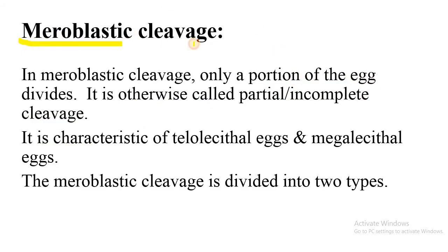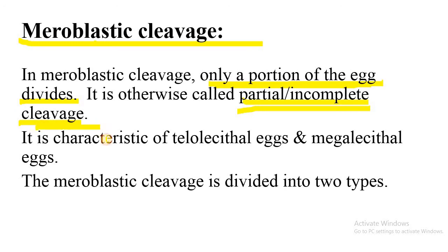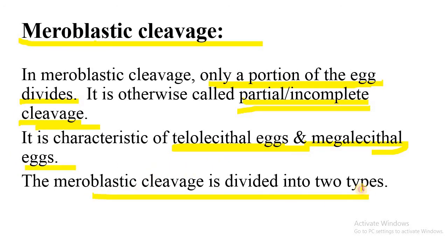Coming to meroblastic cleavage — here only a portion of the egg divides, not the whole egg. It is otherwise called partial or incomplete cleavage. Meroblastic cleavage is characteristic of telolecithal and megalecithal eggs. It is divided into two types: discoidal cleavage and superficial cleavage.